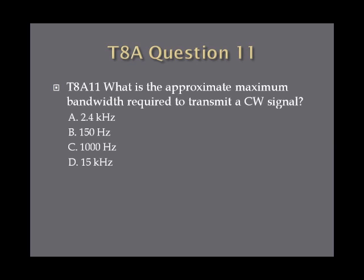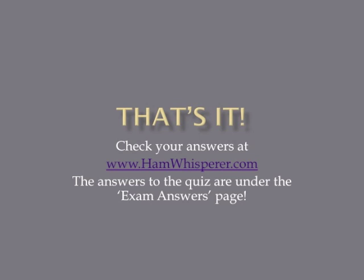Question 11: What is the approximate maximum bandwidth required to transmit a CW signal? A. 2.4 kilohertz. B. 150 hertz. C. 1,000 hertz. Or D. 15 kilohertz. That's it for Lesson 27 in the T8A section. Now that you're done with the quiz, please stop by hamwhisperer.com and check your answers. Until next time in Lesson 28, this is Andy, KU4GKP, saying 73, and I hope to hear you on the air soon.